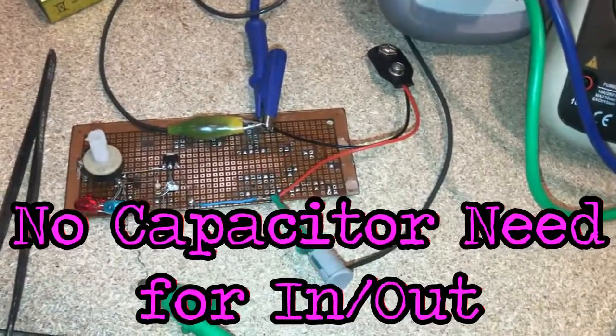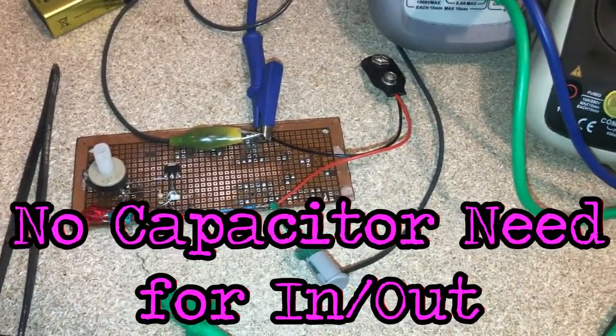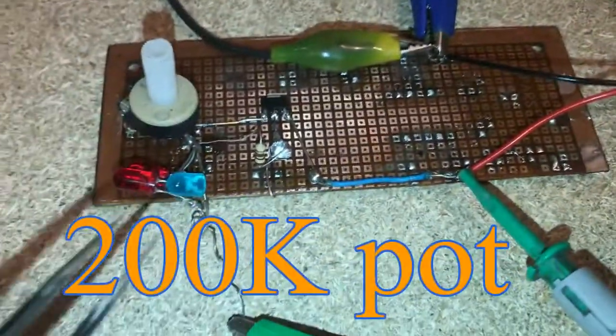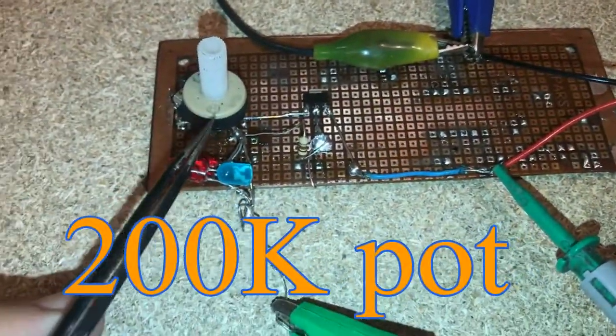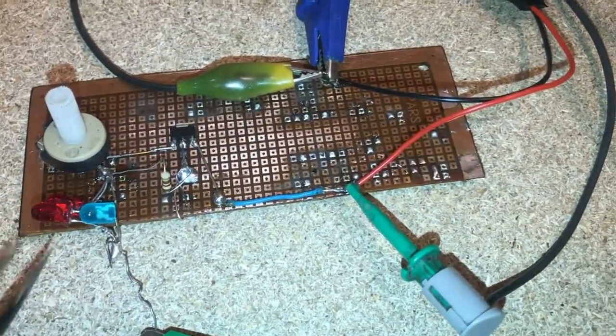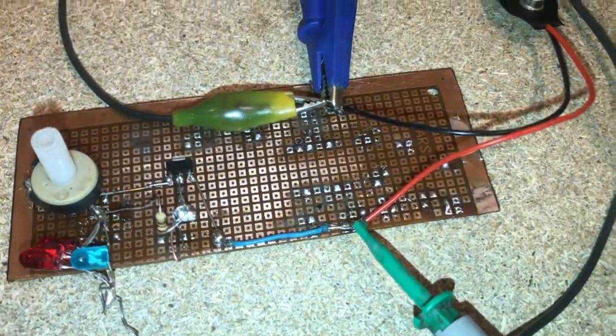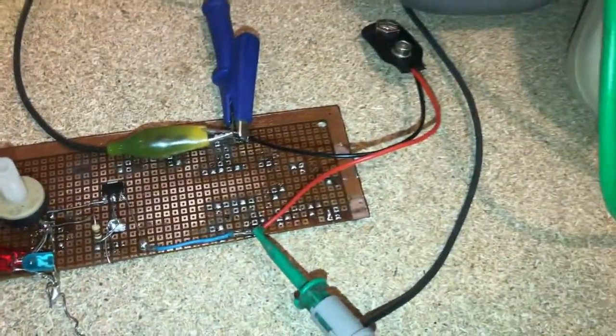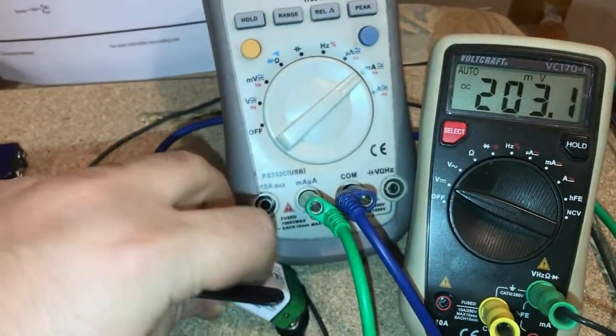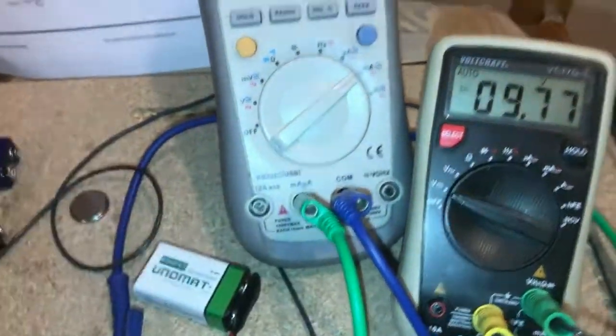So as you can see, the project doesn't need any capacitors or any other special components, only the potentiometer to adjust the amount of current and the load. I could use the LED with the internal shunt of the meter, but I tried to use the dummy load because